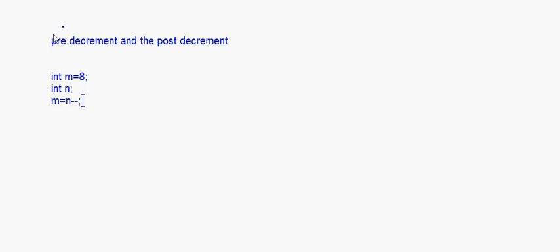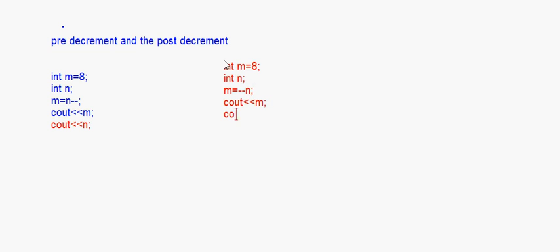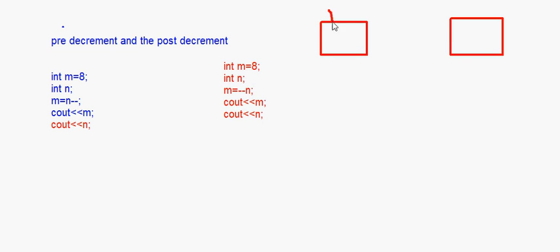Now the same concept applies to decrement. Let's say int m equal to 8, and int n. We look at two codings: first, n = m-- (post-decrement), and second, n = --m (pre-decrement), printing m and n in each case.